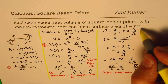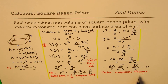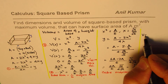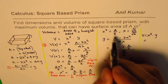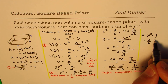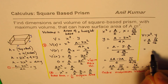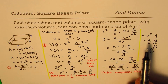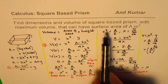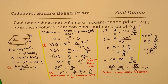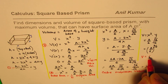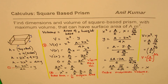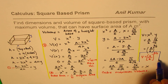Given a fixed surface area, a cube has maximum volume — a very important conclusion. The maximum volume is V = x² · y = (A/6) · √(A/6) = (A/6)^(3/2). So the maximum volume that can be contained in a square-based prism with surface area A is (A/6)^(3/2). This is another very important relation between surface area and maximum volume.